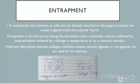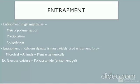Entrapment: the enzymes or cells are not directly attached to the support surface but are simply trapped inside the polymer matrix. Entrapment is carried out by mixing the biocatalyst into a monomer solution followed by polymerization initiated by a change in temperature or biochemical reaction. Polymers like polyacrylamide, collagen, cellulose acetate, calcium alginate, or carrageenan are used as matrices. Entrapment in gel may cause matrix polymerization, precipitation, and coagulation. Entrapment in calcium alginate is most widely used for microbial, animal, plant enzymes or cells. For example: glucose oxidase plus polyacrylamide is an entrapment gel type.